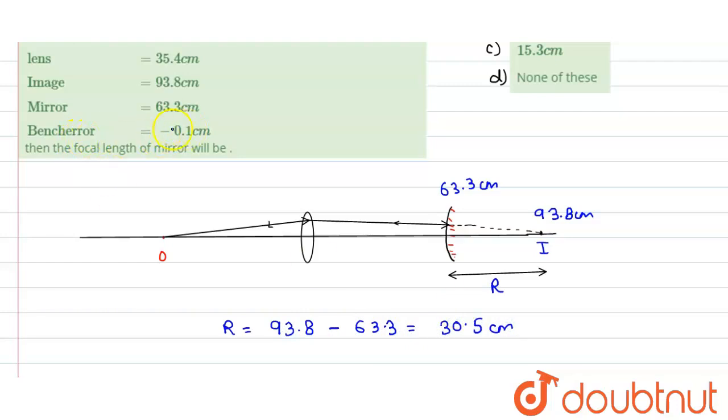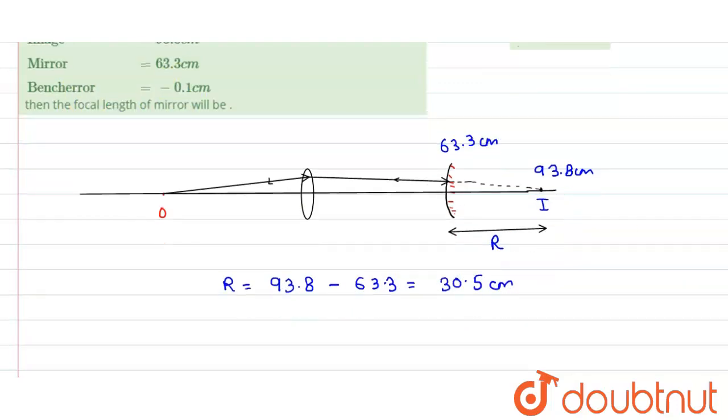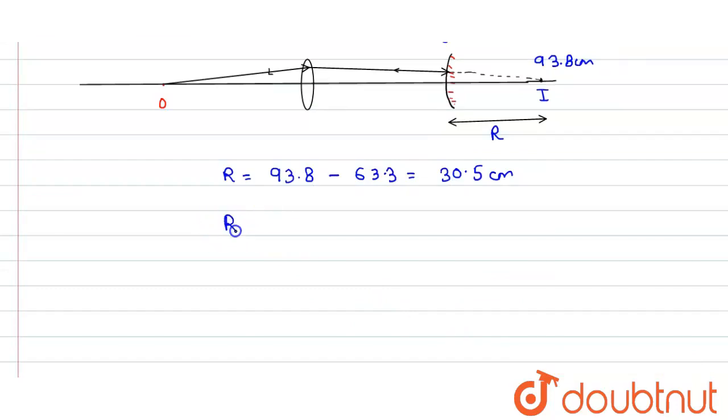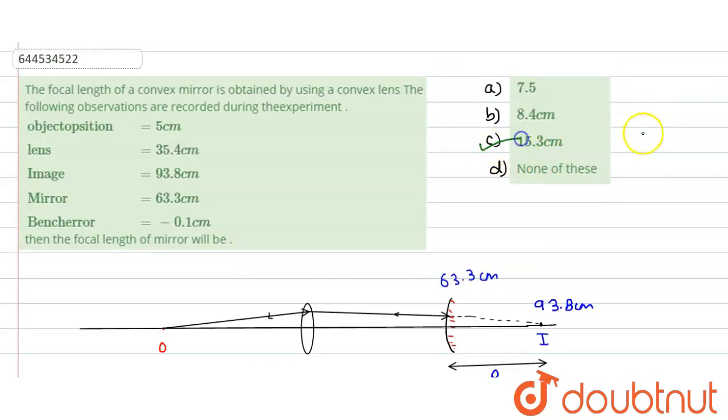It is given that there is a bench error and it is a negative error. So the true value of the radius of curvature, RT, would be equals to 30.5 plus negative error 0.1, which equals 30.6 centimeter. The true focal length would be equals to RT divided by 2. If we divide it by 2, it would be 15.3 centimeter. So C is our correct option.